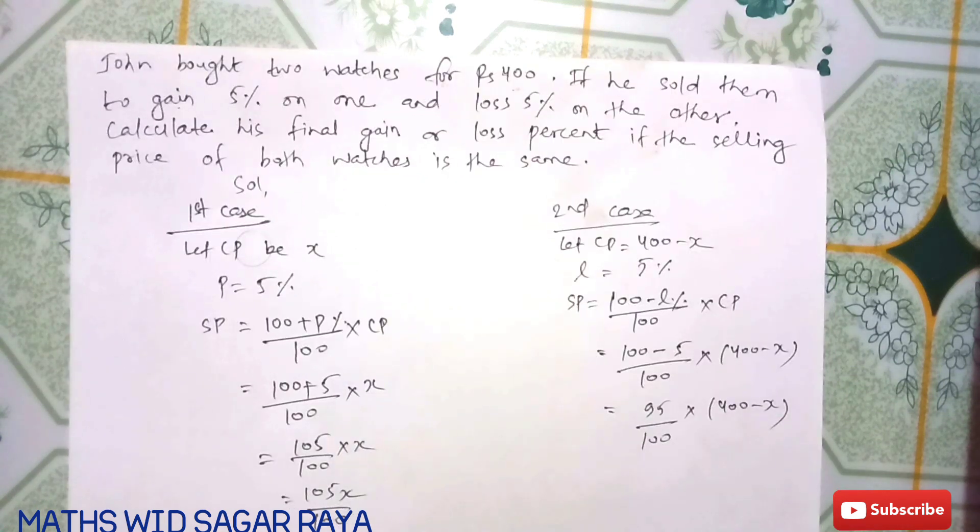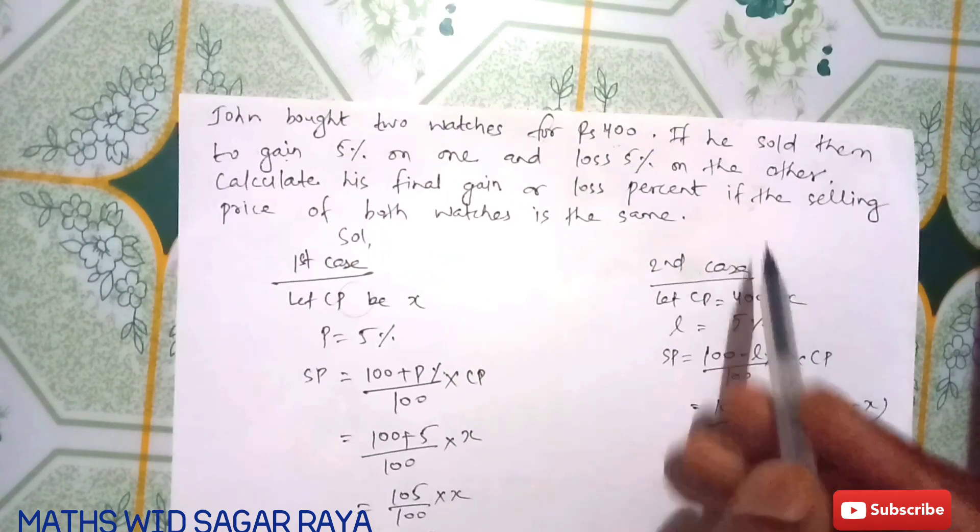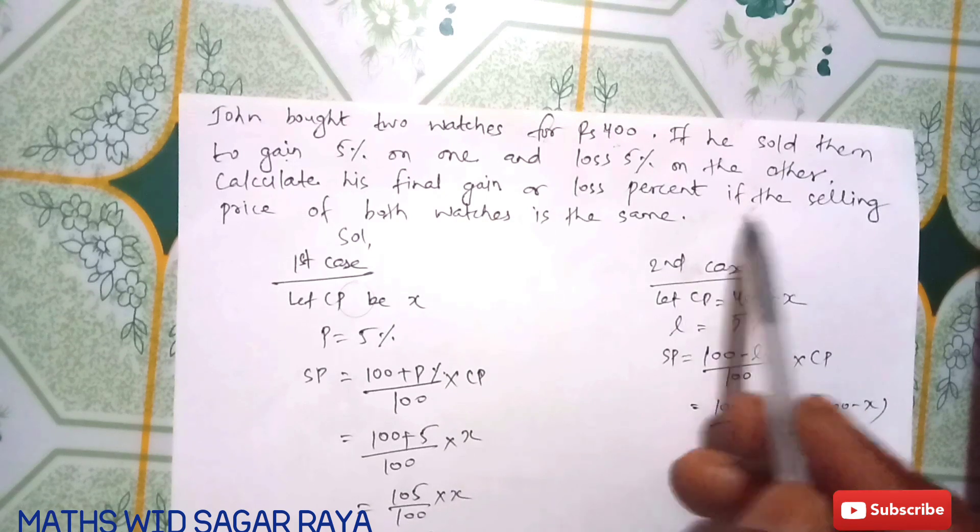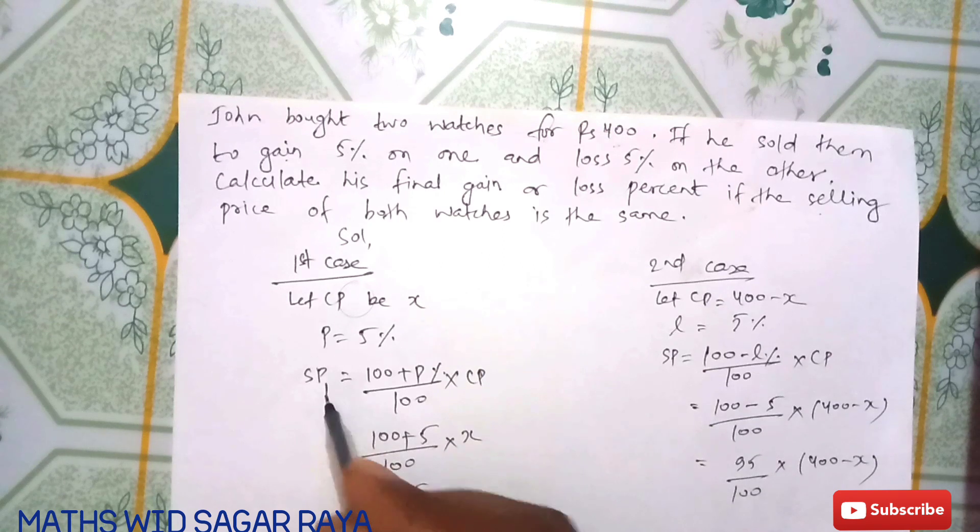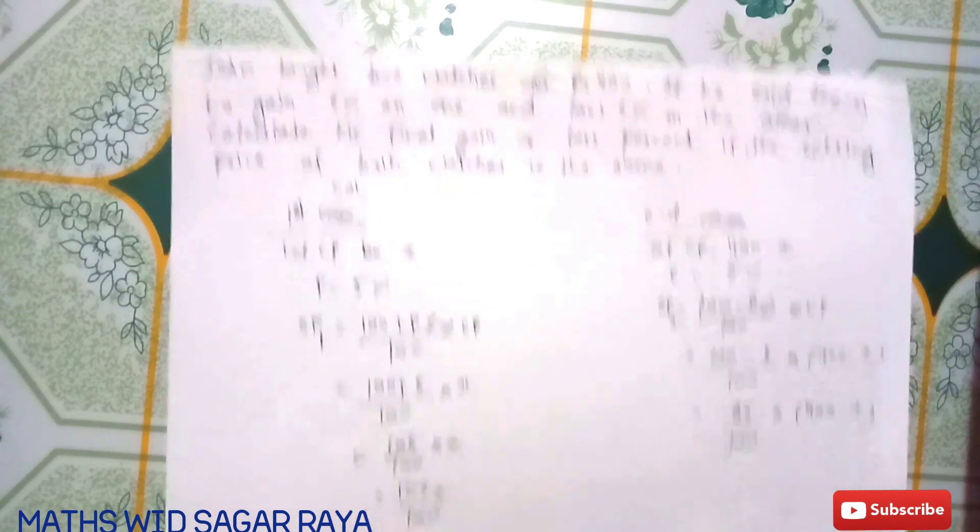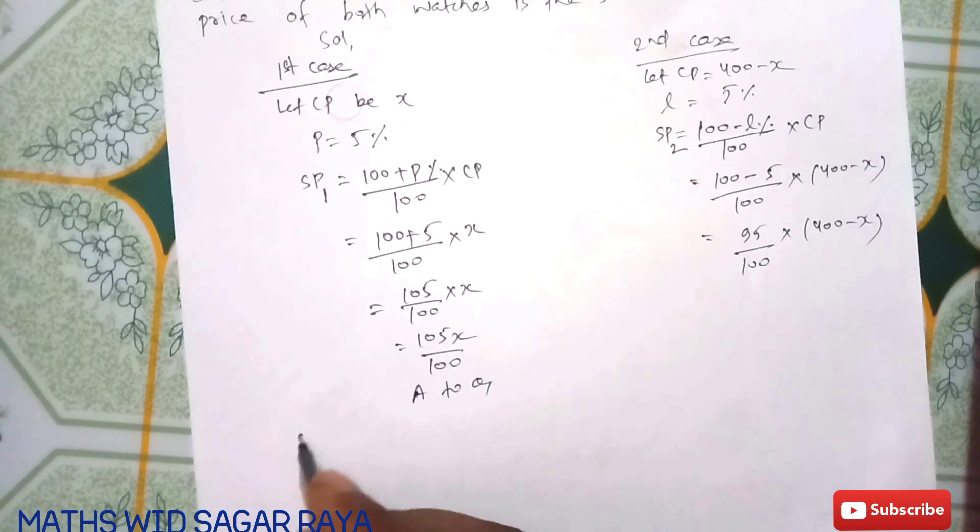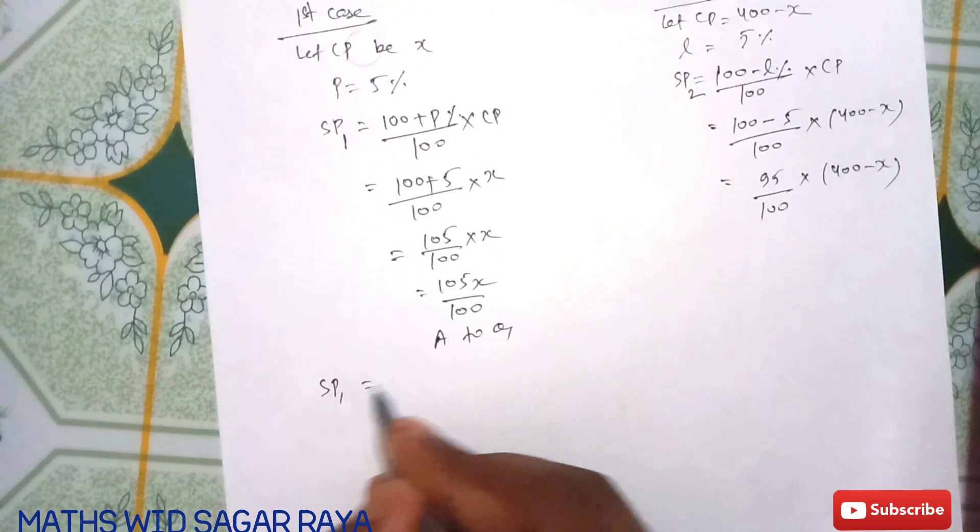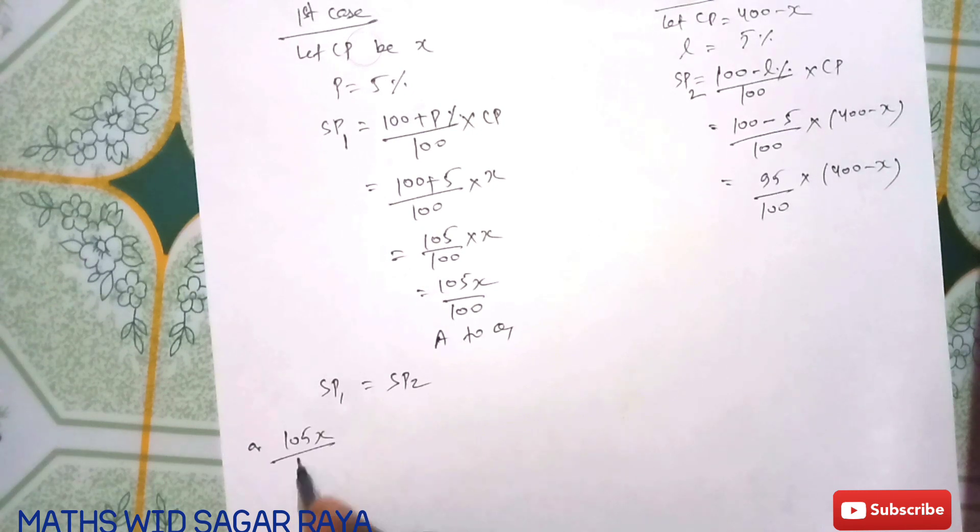You can equate this because according to the question, the selling price of both watches is the same. This means SP1 = SP2, so 105X / 100 = 95(400 - X) / 100.